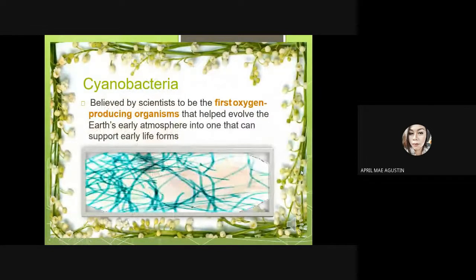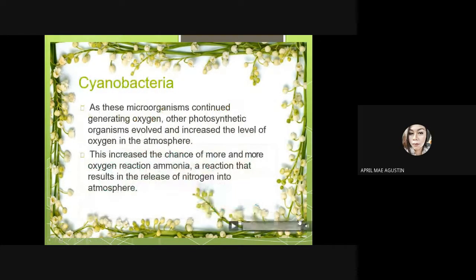Cyanobacteria are believed by scientists to be the first oxygen-producing organisms, which helped evolve the earth's early atmosphere into one that could support early life forms. As these microorganisms continued generating oxygen, other photosynthetic organisms evolved and increased the level of oxygen in the atmosphere. This increased the chance of oxygen reacting with ammonia — a reaction that results in the release of nitrogen into the atmosphere.